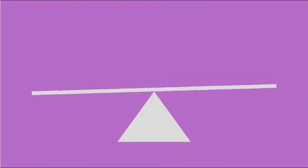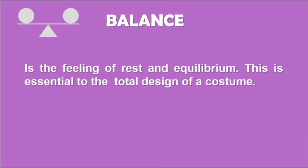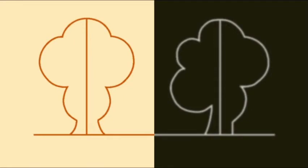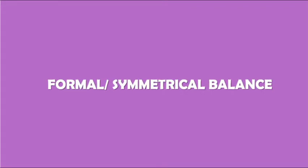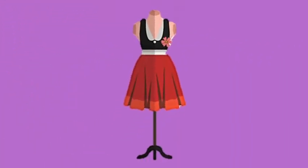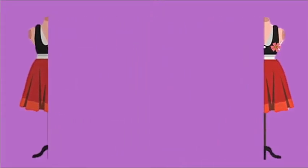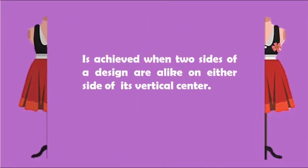A simple concept to understand is balance — it is the feeling of rest and equilibrium, and it is essential to the total design of a costume. There are two types of balance, and they relate to more than just fashion design. Symmetrical and asymmetrical balance are the two types that designers and artists use. The first type is formal balance, or symmetrical balance. An outfit is symmetrical if you were to divide it right down the middle and both sides are exactly the same — achieved when two sides of a design are alike on either side of its vertical center.